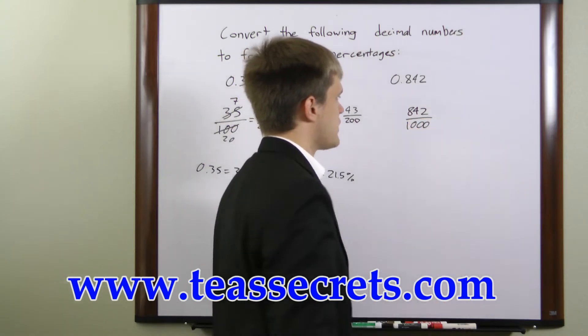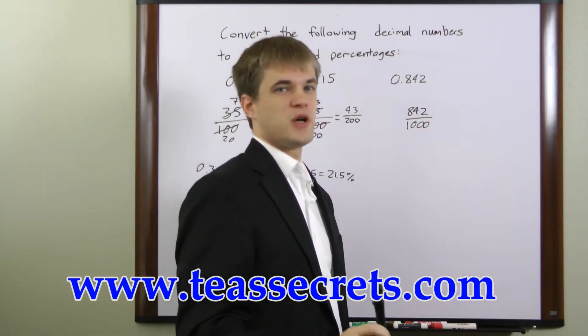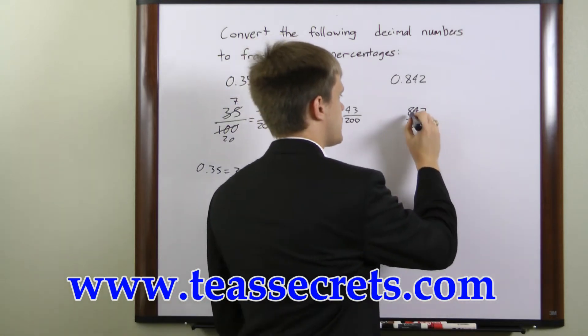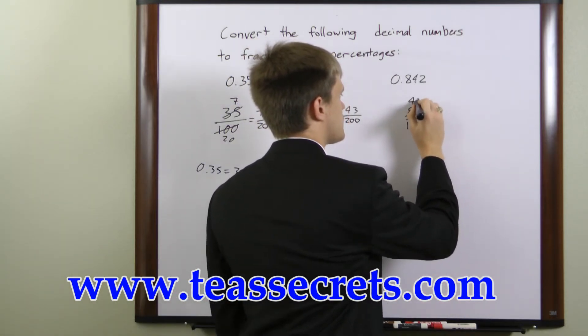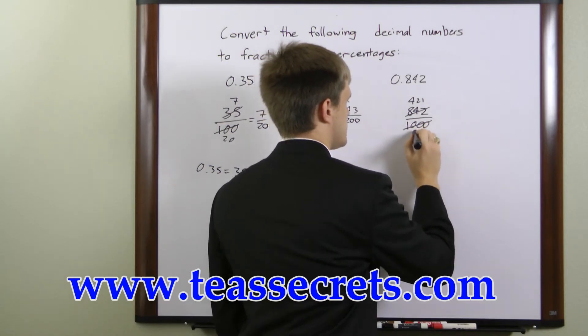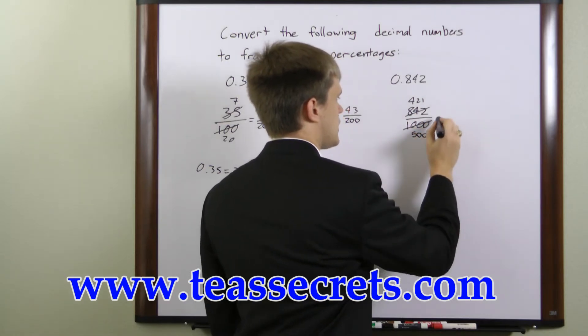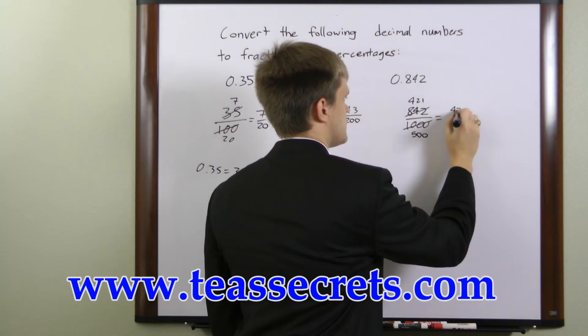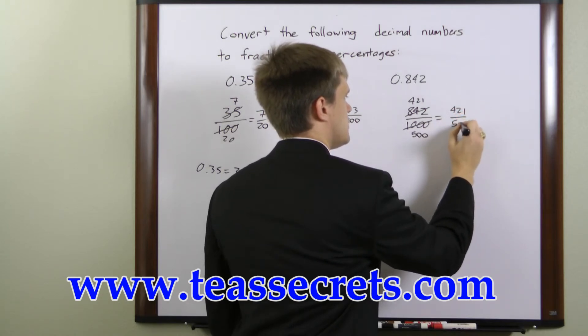842 over 1,000. We can reduce by dividing top and bottom by 2. 842 over 2 is 421, and 1,000 over 2 is 500. So this fraction reduces to 421 over 500.